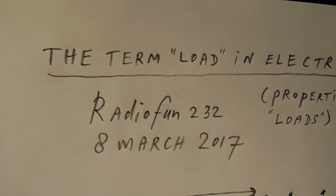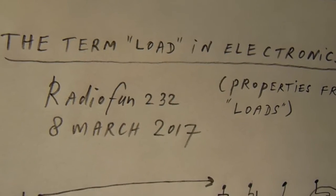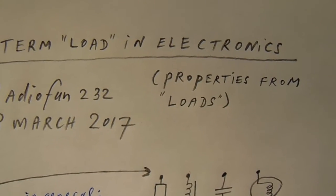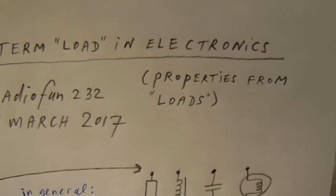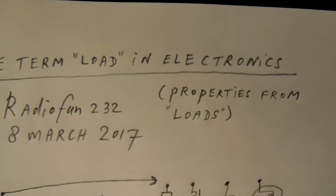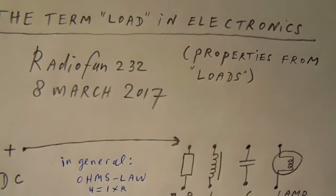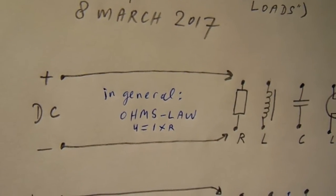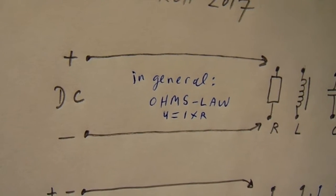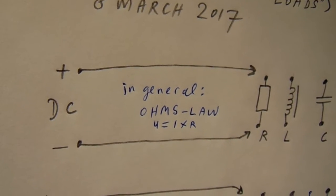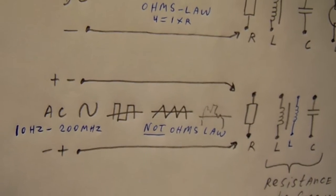In this video something about the term load in electronics, so especially the properties from loads. A load is always connected to a voltage or current source that could be DC but could also be AC.